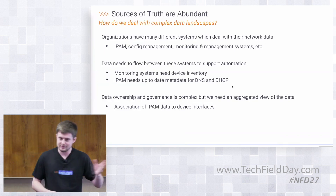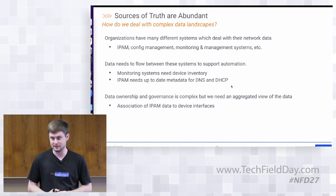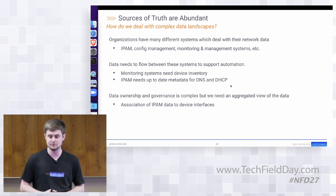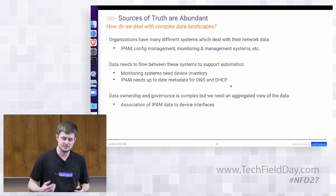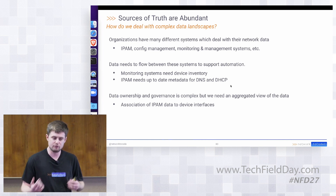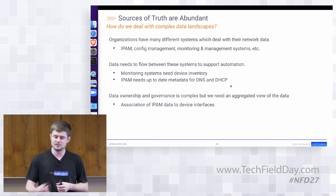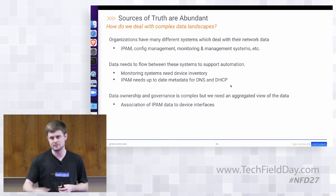In our enterprises, we know that data and the sources of truth for that data are abundant. How many different systems hold network data in your enterprise that you use to either express the intent of your network configuration or metadata thereof? How can we as network automation practitioners aggregate that data in a meaningful way, form the relationships necessary to do meaningful things, and move data between systems efficiently for onboarding devices to monitoring and management systems?